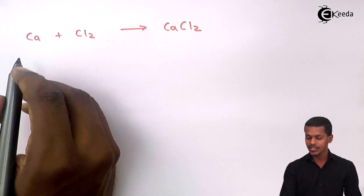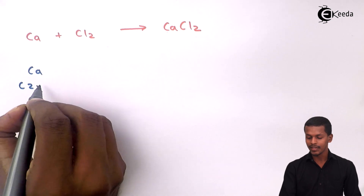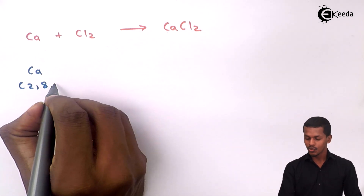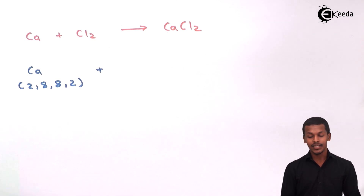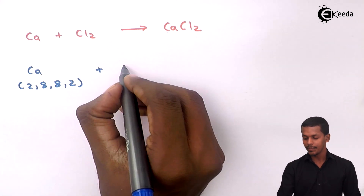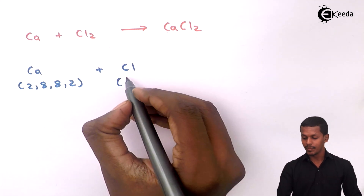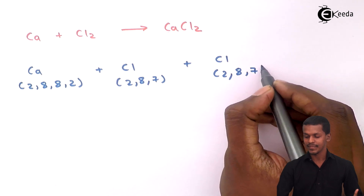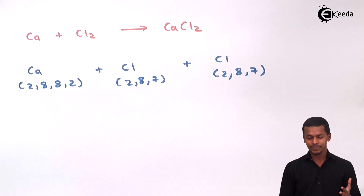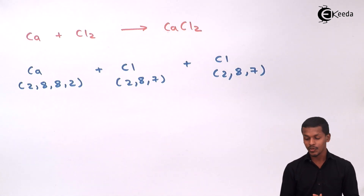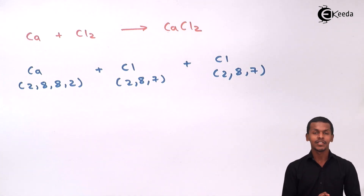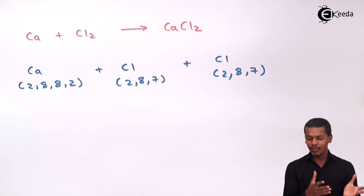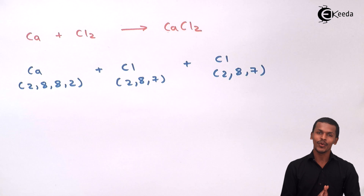For calcium, its electronic configuration is 2,8,8,2. And for chlorine — since there are two chlorine atoms in CaCl₂ — each chlorine has electronic configuration 2,8,7. Calcium does not have a noble gas configuration because it has 2 valence electrons. The noble gas has 8 electrons in its outermost shell (except helium), so calcium must lose its 2 electrons. After giving 2 electrons, it becomes 2,8,8, behaving like argon.